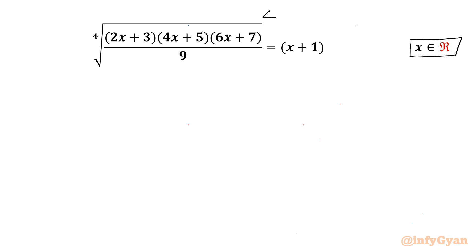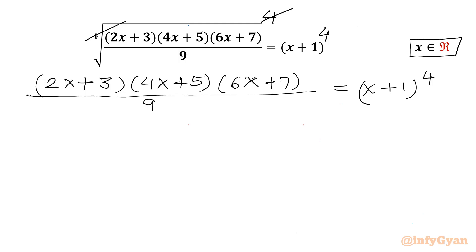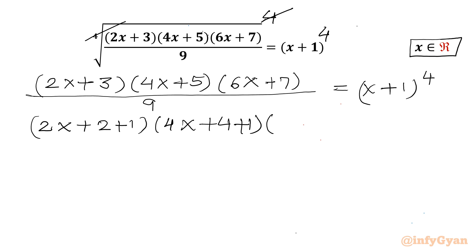Let us get started by raising both sides to the power 4. The 4th root and power 4 cancel, so we get (2x+3)(4x+5)(6x+7) divided by 9, equal to (x+1)⁴. Now I will take 9 to the RHS. The numerator terms become (2x+2+1), (4x+4+1), and (6x+6+1). The RHS becomes 9 times (x+1)⁴.